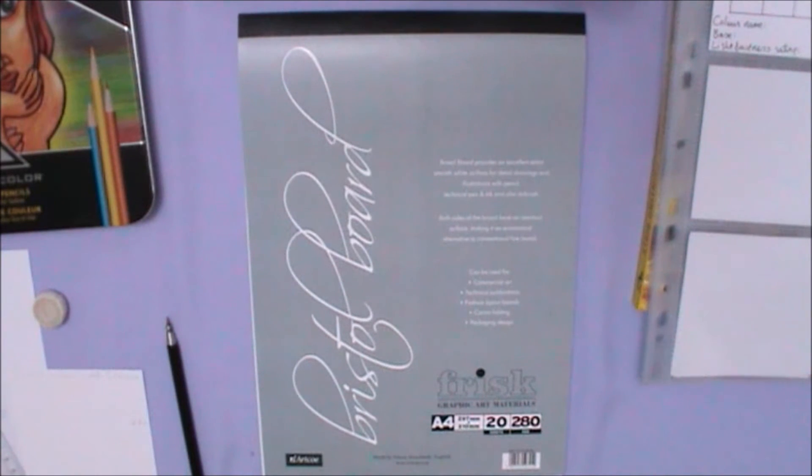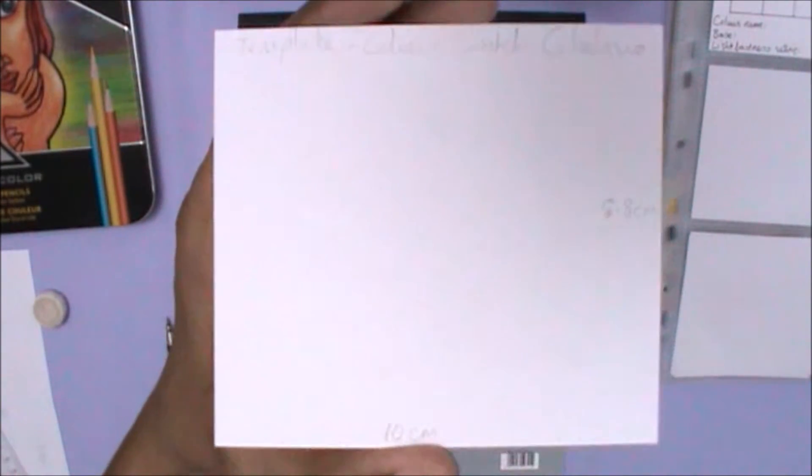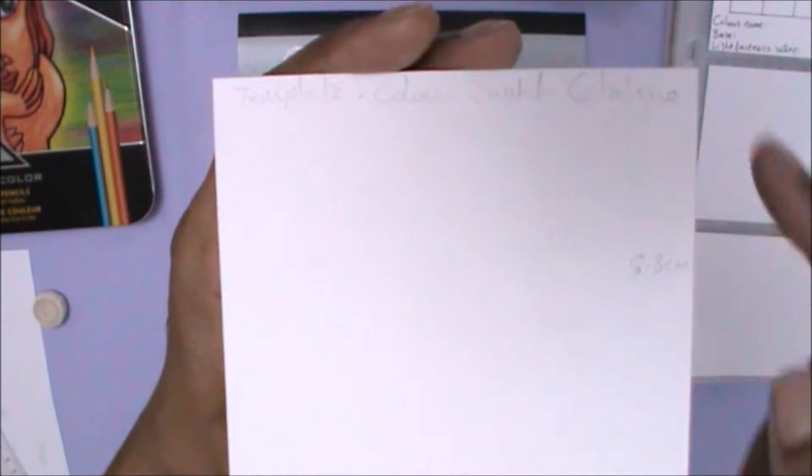First of all, I would recommend using the same paper to do the swatches on that you would use to create your drawings in the first place. That's just because if you create your swatches on a different kind of paper, it may not represent how it's going to look on the actual paper you'll use. So I'm using the Bristol board by Frisk. To make things easier on myself, I have already cut out a template which is 10 centimeters by 8.8 centimeters, and then I'm going to draw around it.